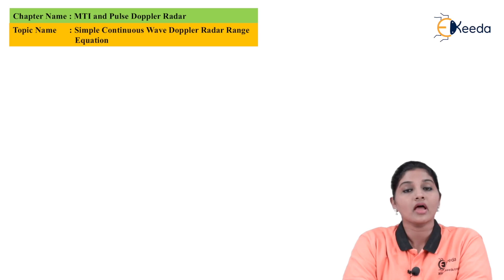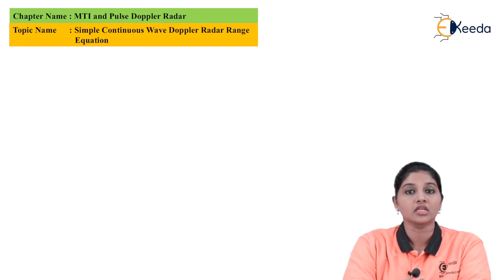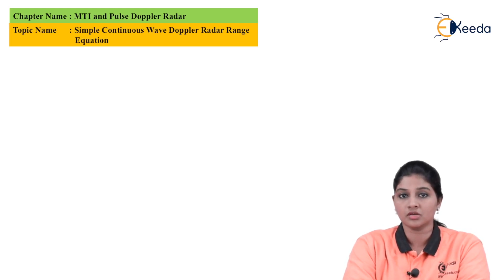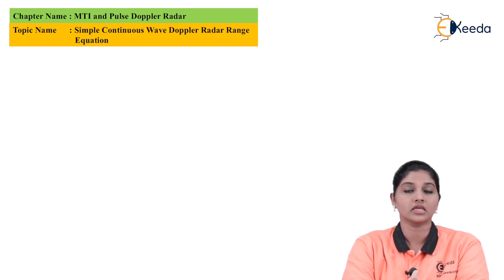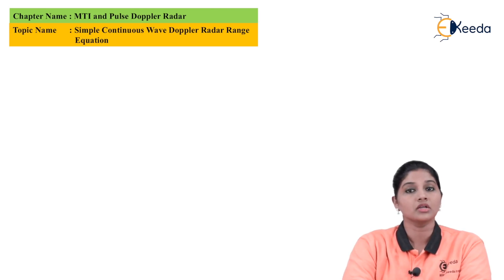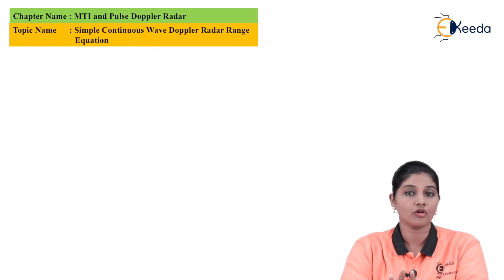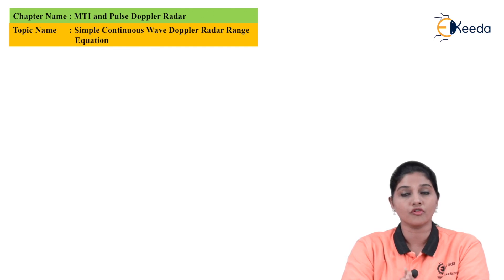The radar is basically used for detecting and tracking the location of the object. There are two types of radar that can be used. The first one is the continuous wave radar and the second is the pulse radar. The continuous wave radar basically uses the Doppler frequency shift for identifying, tracking, or detecting the moving object.